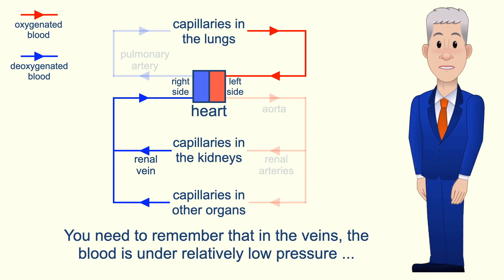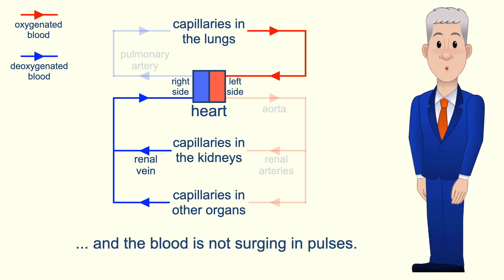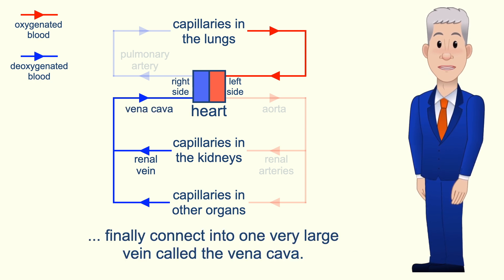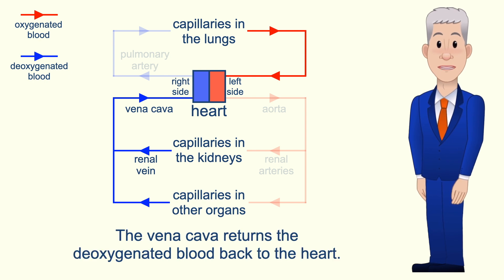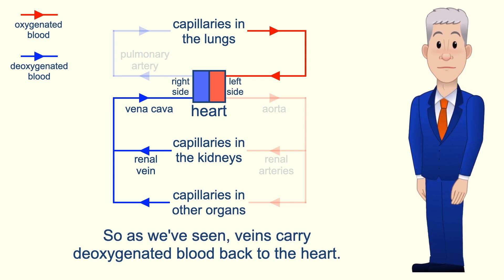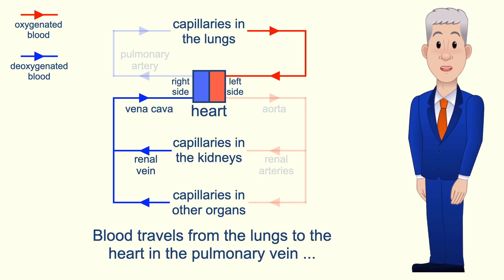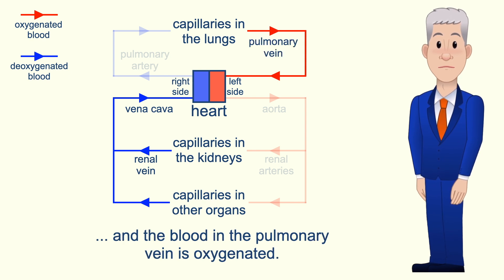In the veins the blood is under relatively low pressure and the blood is not surging in pulses. All of the veins from the body organs finally connect into one very large vein called the vena cava, and the vena cava returns the deoxygenated blood back to the heart. Veins carry deoxygenated blood back to the heart — however there is one exception. Blood travels from the lungs to the heart in the pulmonary vein, and the blood in the pulmonary vein is oxygenated.